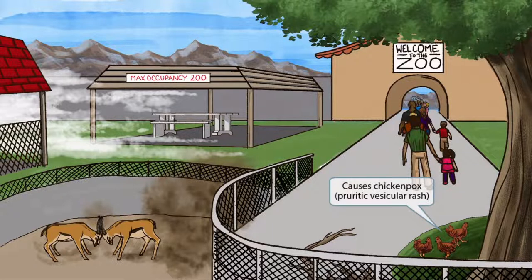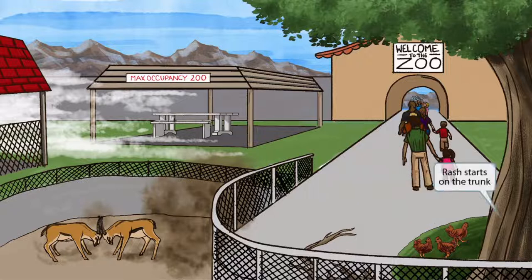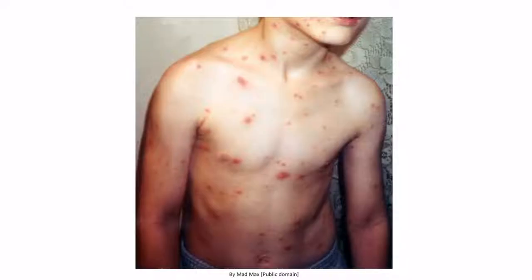Notice that we've shown some chickens next to the tree. The chickens are here to help you remember that VZV causes chicken pox, which is a pruritic vesicular rash. The fact that the chickens are right next to the tree trunk should help you remember that the rash starts on the trunk. This is an image of a child with chicken pox — he has many erythematous spots on his trunk, and many of the vesicles appear to have popped, leaving behind crusted papules.